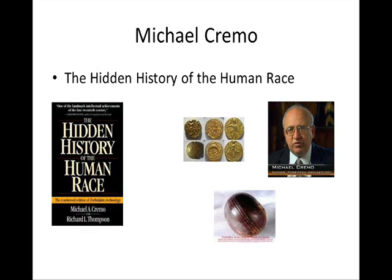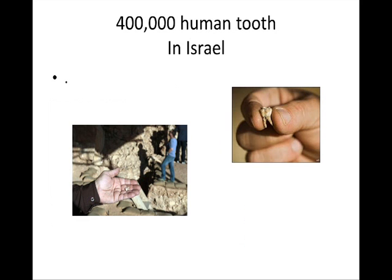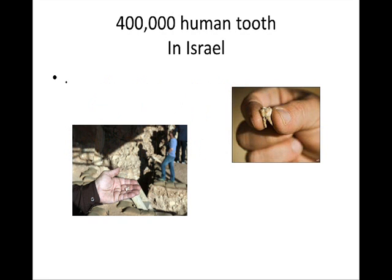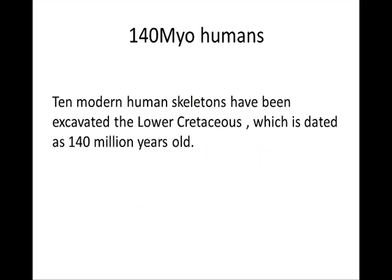This is kind of a problem for evolution. Recently, a 400,000-year-old human tooth was found in Israel. This is also a problem because evolutionists claim that humans evolved in Africa 100,000 years ago, and they claim to have evidence from DNA. So if humans evolved in Africa 100,000 years ago, why is there a 400,000-year-old human tooth in Israel?